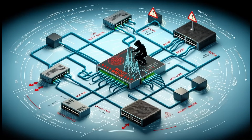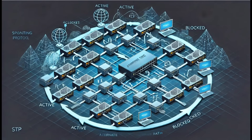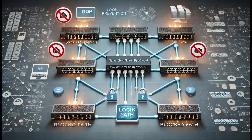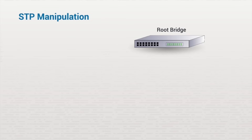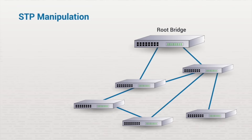Another common switch attack is known as a spanning tree protocol, or STP, manipulation attack. STP is normally configured on a network with several switches, and its primary purpose is to prevent switching loops. Often, whether intentional or not, there are several paths data can take to get from its source to its destination. STP dynamically turns off certain switch ports to ensure that data can't get stuck hopping from switch to switch without ever reaching its intended target.